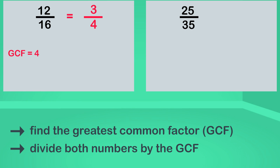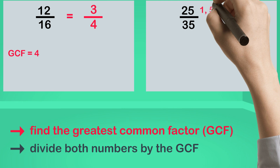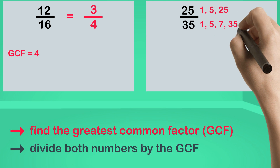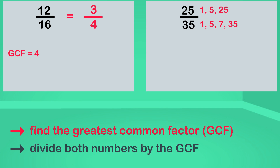Now let's simplify the second fraction: twenty-five thirty-fifths. Step one: find the greatest common factor. The factors of twenty-five are one, five, and twenty-five. The factors of thirty-five are one, five, seven, and thirty-five. Twenty-five and thirty-five have these factors in common.